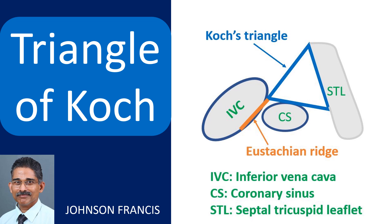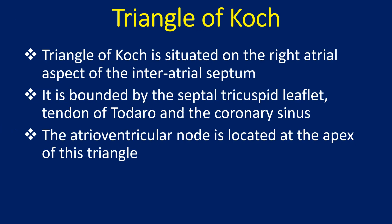Discussion on the Triangle of Koch and its importance while ablating supraventricular tachycardia. The Triangle of Koch is situated on the right atrial aspect of the interatrial septum. It is bounded by the septal tricuspid leaflet, the tendon of Todaro, and the coronary sinus. The atrioventricular node is located at the apex of this triangle.